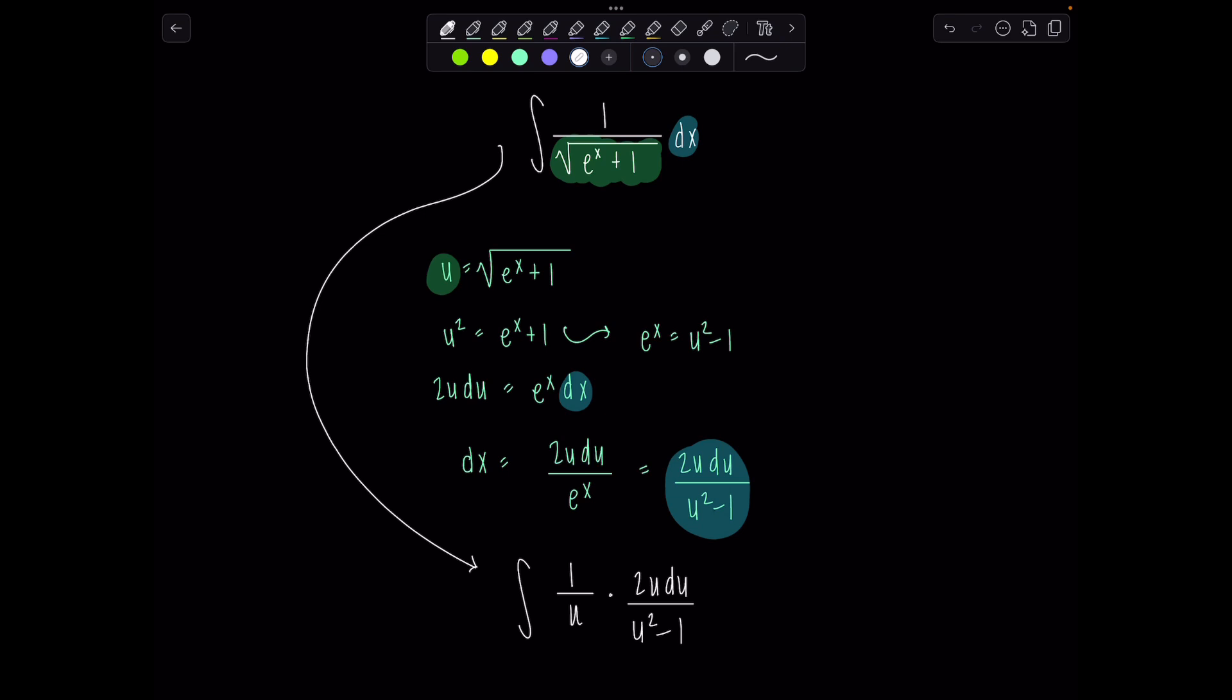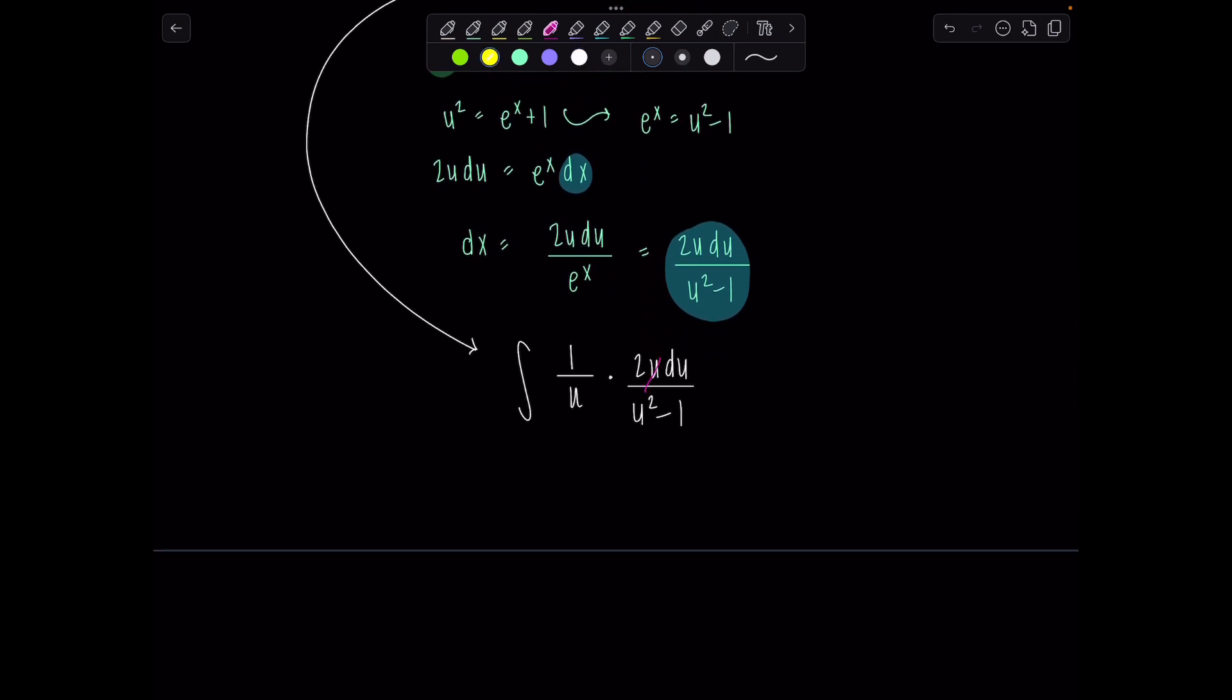All right, beautiful. Now, do you notice? Yes, this u cancels out. Beautiful. And then we're left with 2du over u squared minus 1.